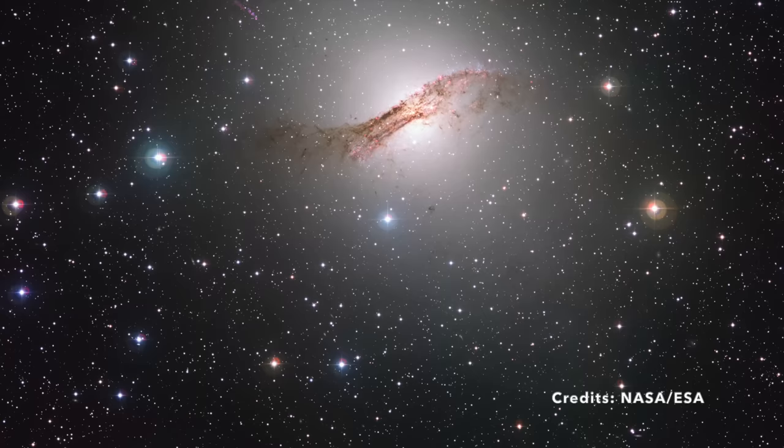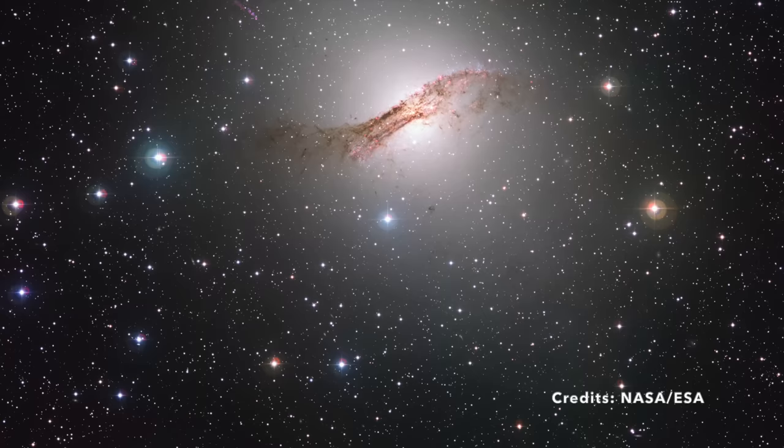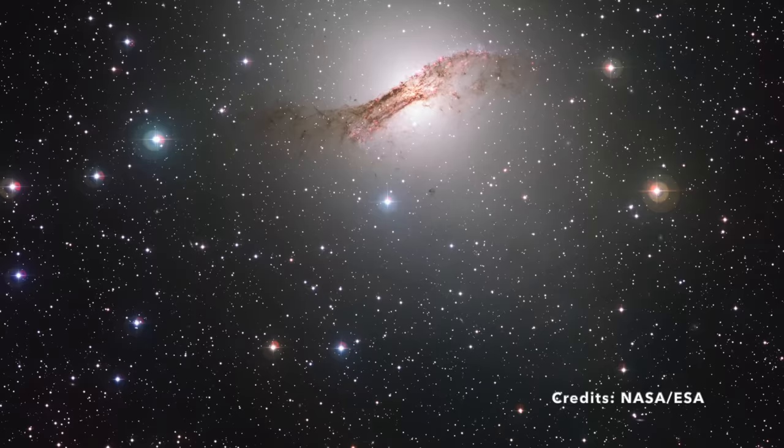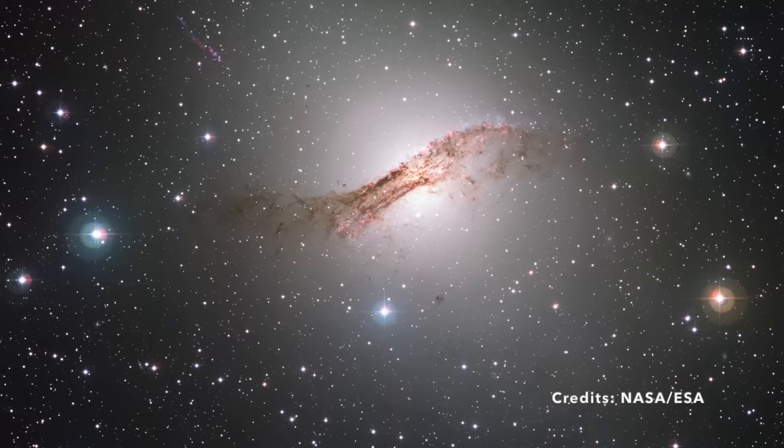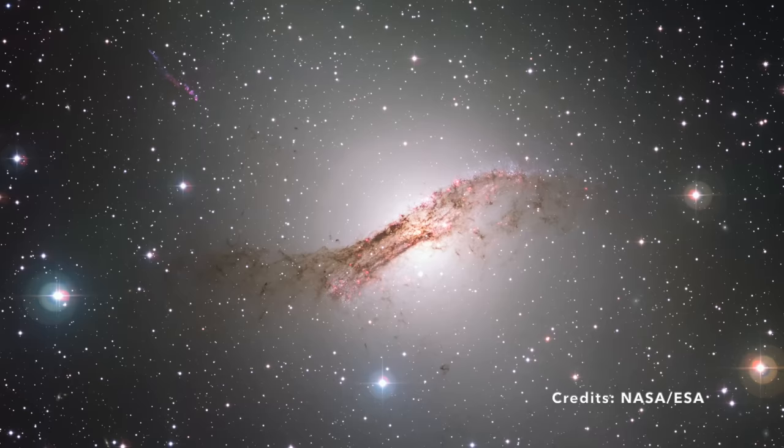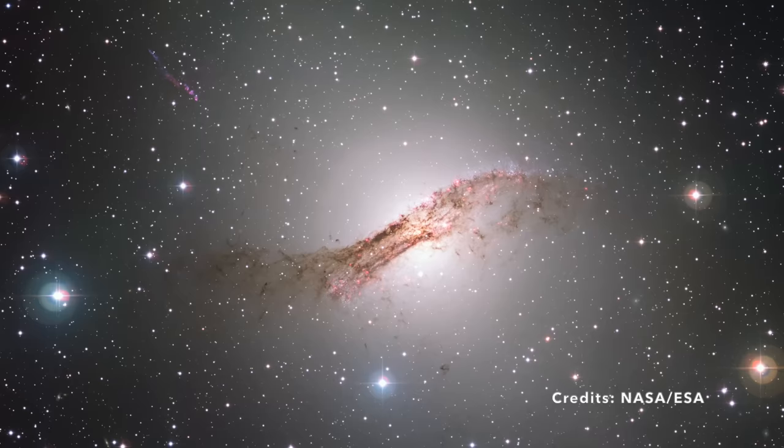This is not just any ordinary galaxy; it's a trove of celestial mysteries waiting to be unraveled. Centaurus A is uniquely categorized as an elliptical galaxy in the grand tapestry of the universe. An elliptical galaxy is somewhat like a vast cosmic swirl of stars, gas, and dust that's shaped more like a stretched-out sphere, rather than the flat spirals we often visualize.